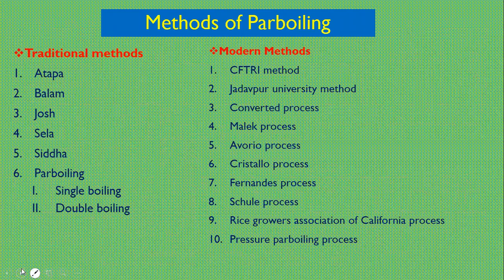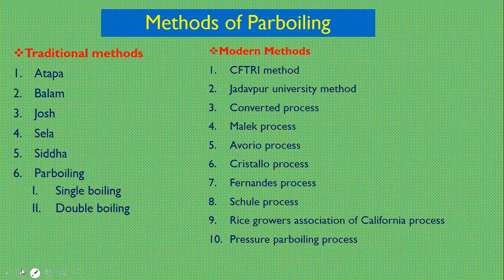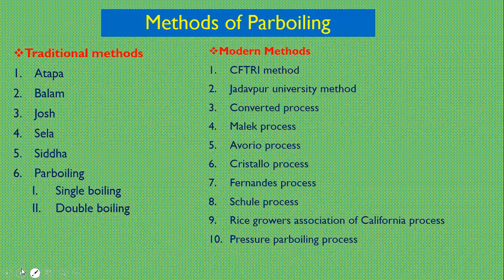The parboiling methods are basically categorized into two major categories: traditional methods and modern methods. Traditional methods include the atapa method, balang, josh, sela, siddha, and parboiling, which is further divided into single boil and double boil. Modern methods include the CFTRI method (Central Food Technology Research Institute), Jadavpur University method, convert air process, Malik process, Aveario process, Cristallo process, Fernandes process, Shuri process, Rice Growers Association of California process, and pressure parboiling process.